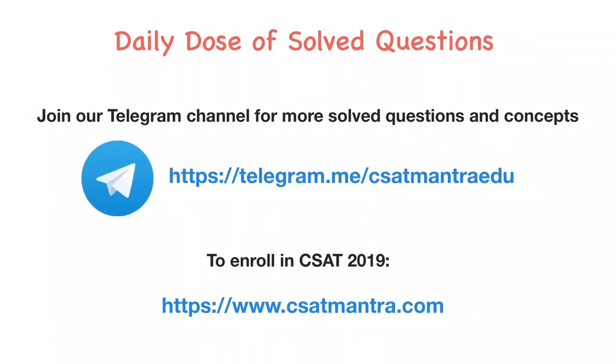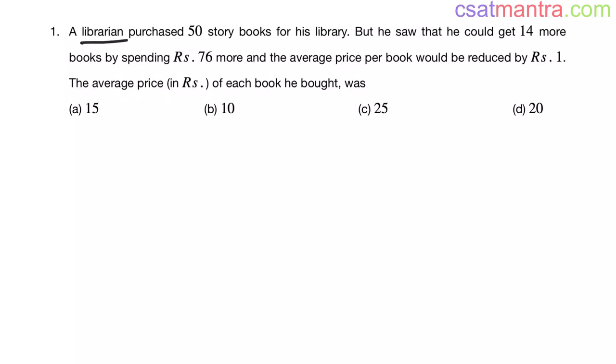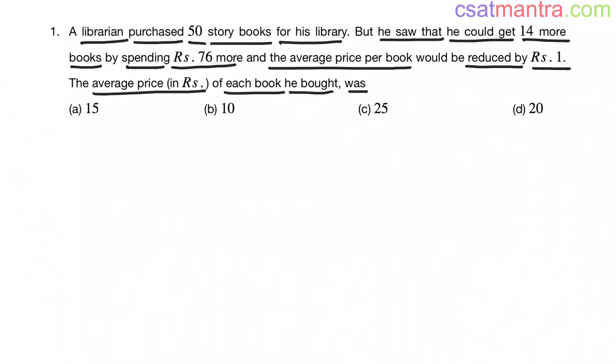Both the links are given below in the description. A librarian purchased 50 story books for his library. But he saw that he could get 14 more books by spending 76 rupees more and the average price per book would be reduced by 1 rupee. The average price in rupees of each book he bought was?